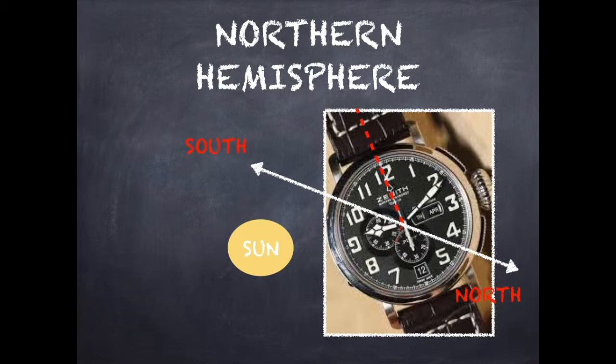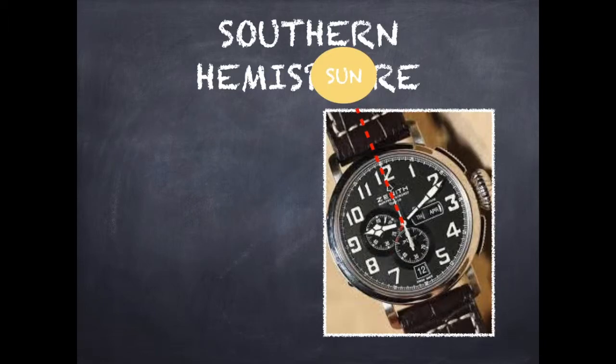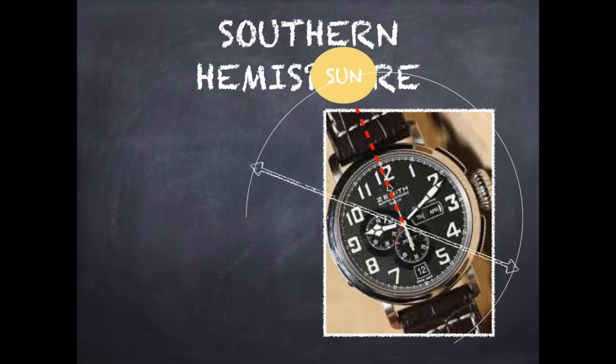Coming on to Southern Hemisphere, it's a little different. In case of Southern Hemisphere, what you need to do is point the 12 o'clock mark toward the Sun. You will find the line halfway between the hour hand and 12 o'clock is the direction in which north lies.